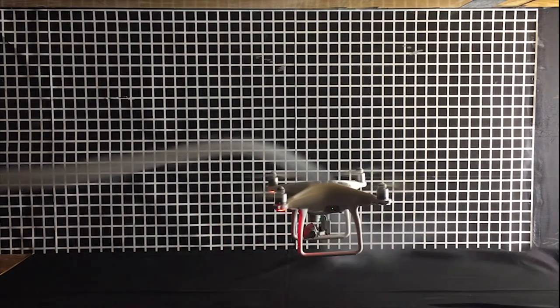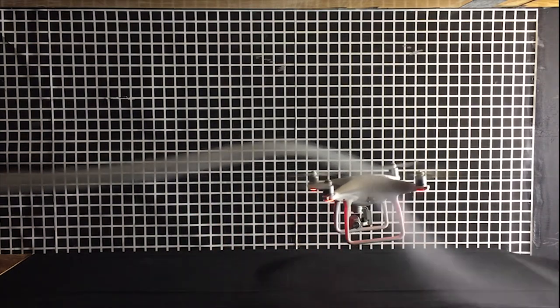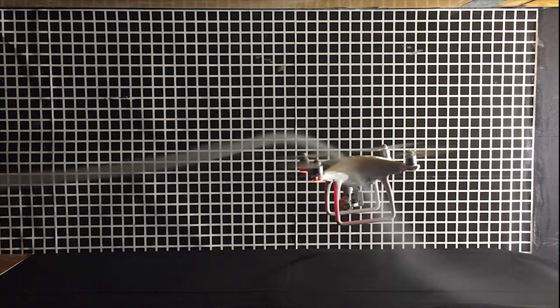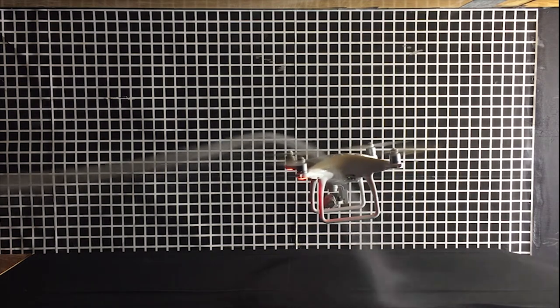In this video, you can see a wind tunnel test that allowed us to optimize the angle at which the high voltage net would be mounted on the unmanned multicopter.